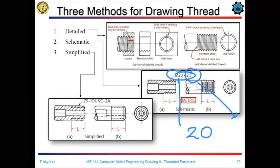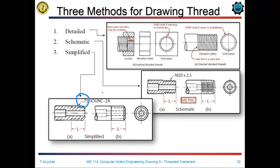For inch-type fasteners, we also have different representation types. The first number is the major diameter of the fastener. The second number, which is 10, tells us the thread quantity per inch. Then we have the thread type, which is the UNC type, and the last one is the tolerance fit size for the fastener.